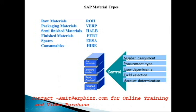Material types also control number assignment — for example, raw material numbers can start from 10, packaging from 20, and semi-finish from 30, giving different number ranges per material type. Additionally, field validations and enhancements can be configured per material type — for instance, the purchase value key can be mandatory for raw material but optional for semi-finish material.